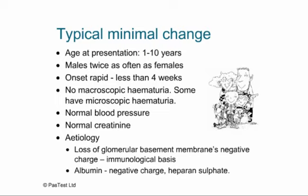What causes minimal change disease isn't terribly well understood, but there's felt to be an immunological basis to loss of the glomerular basement membrane's negative charge. In health, the GBM is negatively charged and repels similarly negatively charged albumin molecules. In minimal change disease, the heparan sulfate portion of the GBM loses its negative charge, and albumin molecules pass very readily through the GBM, spilling in vast quantities into the urine.